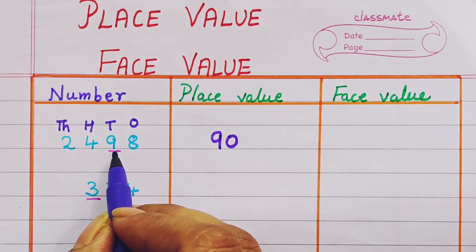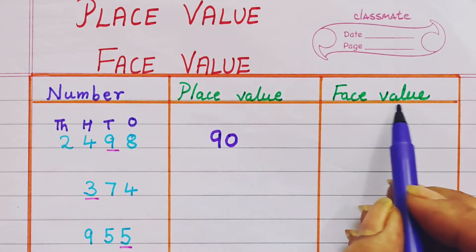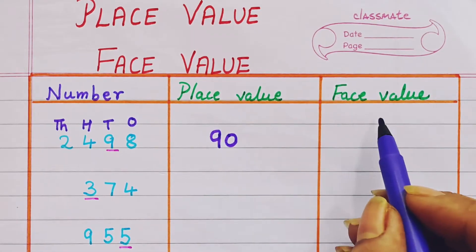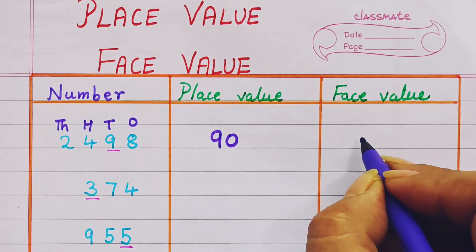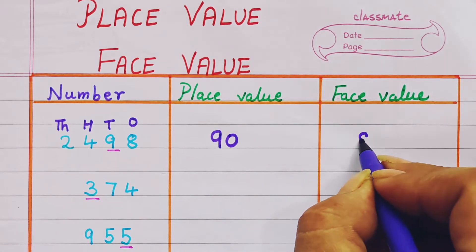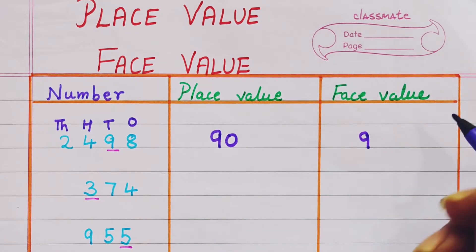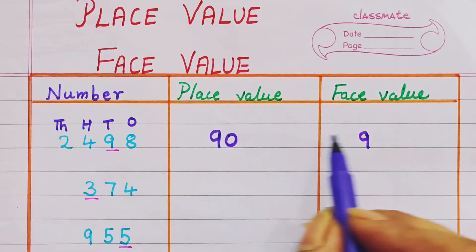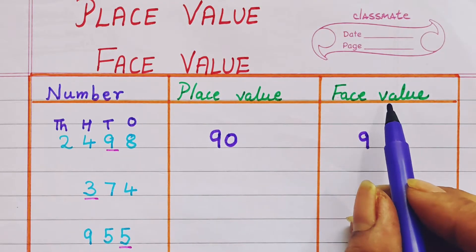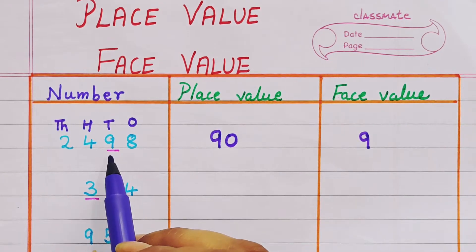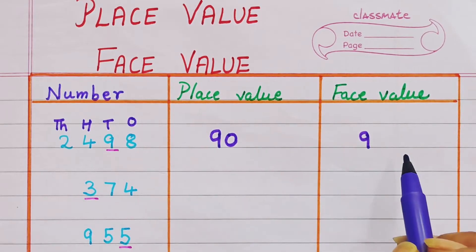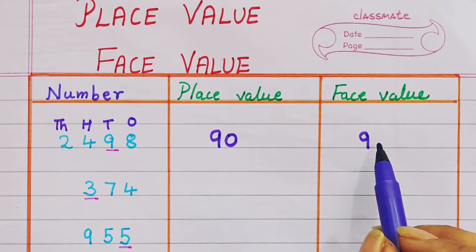Since 9 is in the tens place, the place value of 9 becomes 90. The face value will be 9 itself — the number itself. Always remember, face value is the number itself; whichever number it is, the face value of that number will be that same number.